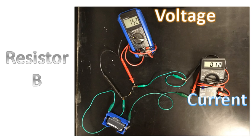Now, different resistors have different resistances. And so this is resistor B. Please record the voltage and the current.